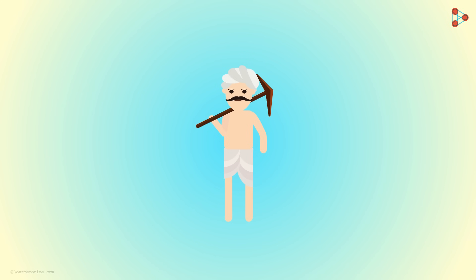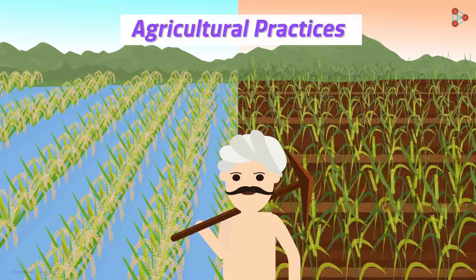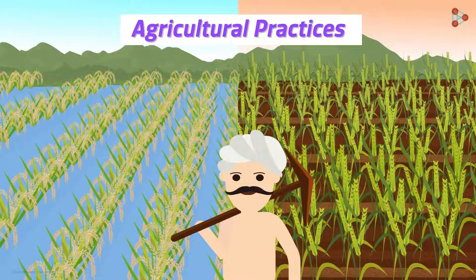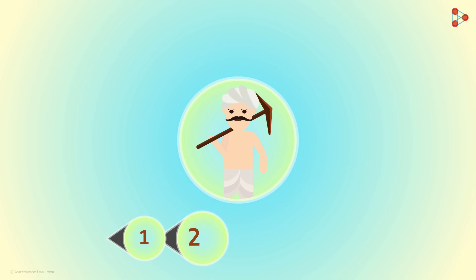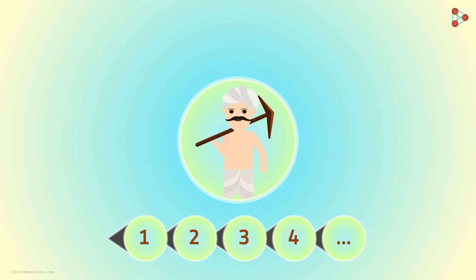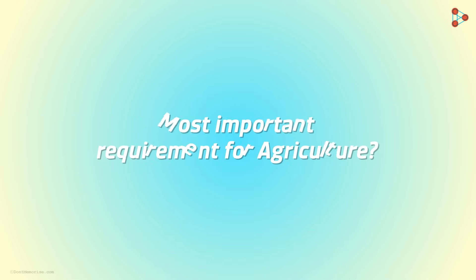Let us pick up from where we left off — agricultural practices. We decided to learn the various processes used for the activity of agriculture. What do you think is the most important requirement for agriculture?